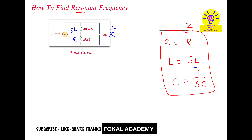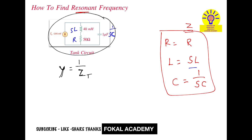According to the problem, we want the resonant frequency. Whenever we want the resonant frequency, we need the overall admittance of the circuit. Admittance Y is the inverse of impedance Z, so overall admittance equals 1 over overall impedance. From the overall admittance, we can easily find the resonant frequency.